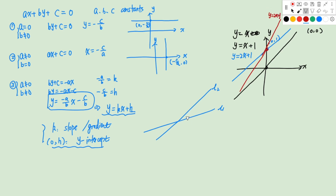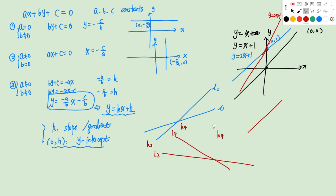We have to be careful when we say steeper or not, because this really depends on the direction of the line. For lines going upward, a greater gradient means steeper. However, if I draw lines L3 and L4 going downward, L4 is steeper visually. But if you look at the gradient, it will be a negative number. K4 turns out to have a greater absolute value than K3, but because they are both negative numbers, K4 will be smaller than K3 — think of it as negative 2 versus negative 1.